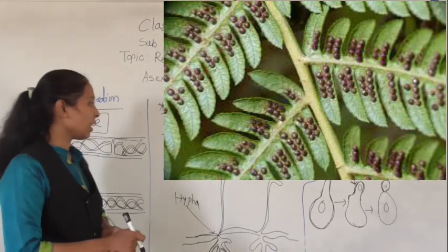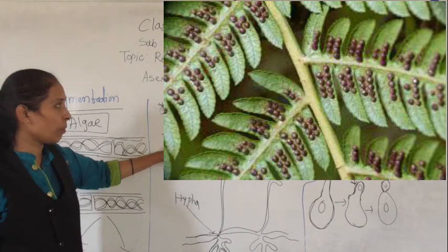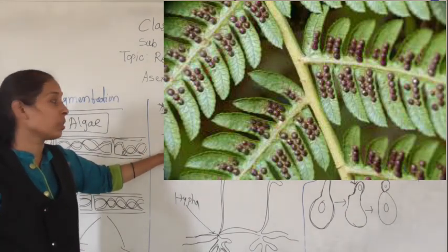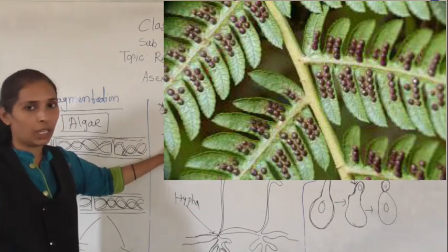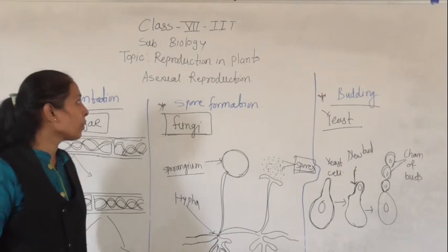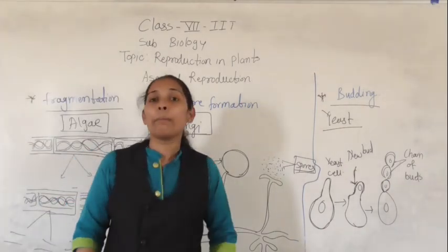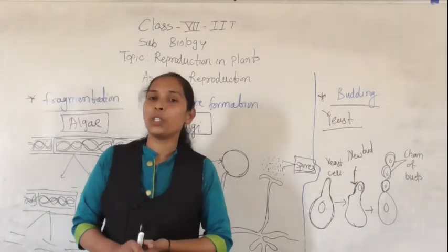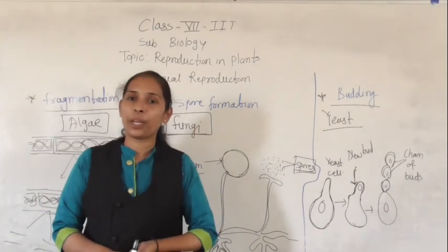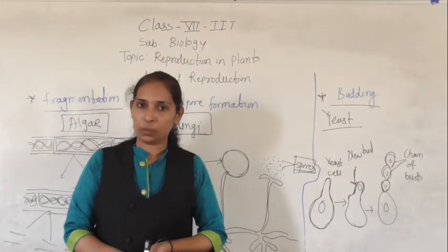One more example for spore formation: the fern plant. The back side of the fern plant has brown color spots called sori, which are useful for reproducing the plant through spore formation. So this is all about today's session. We will meet in the next video with the next topic. Thank you.